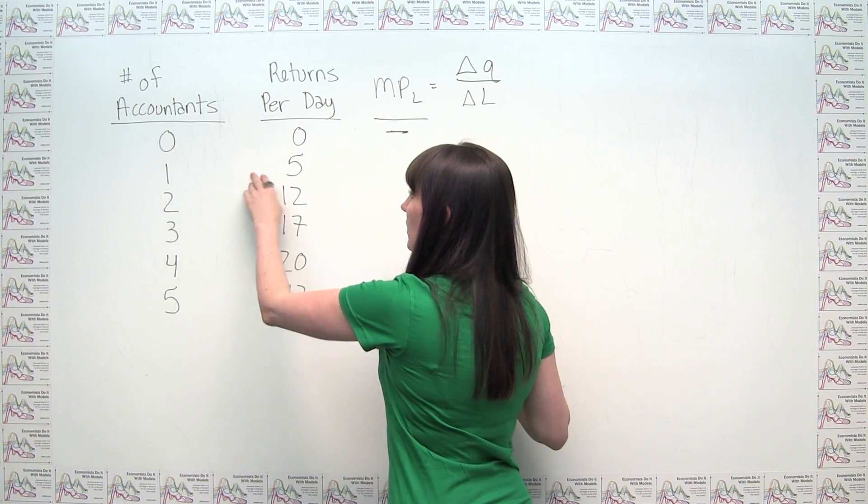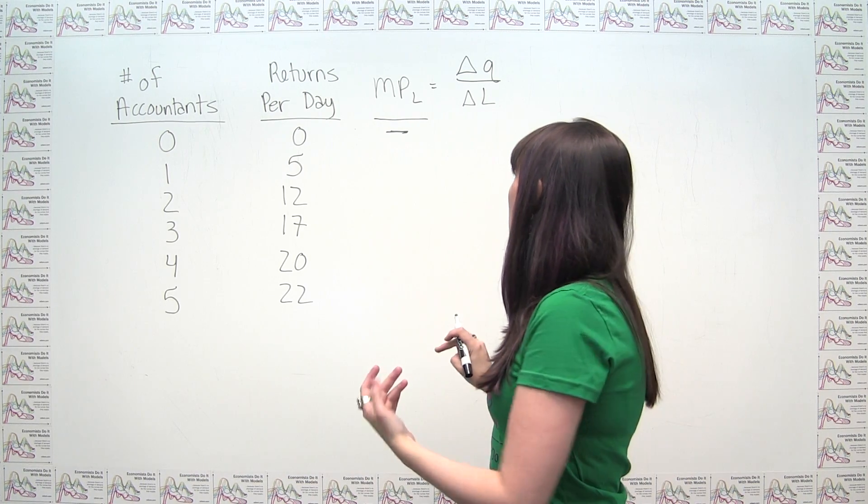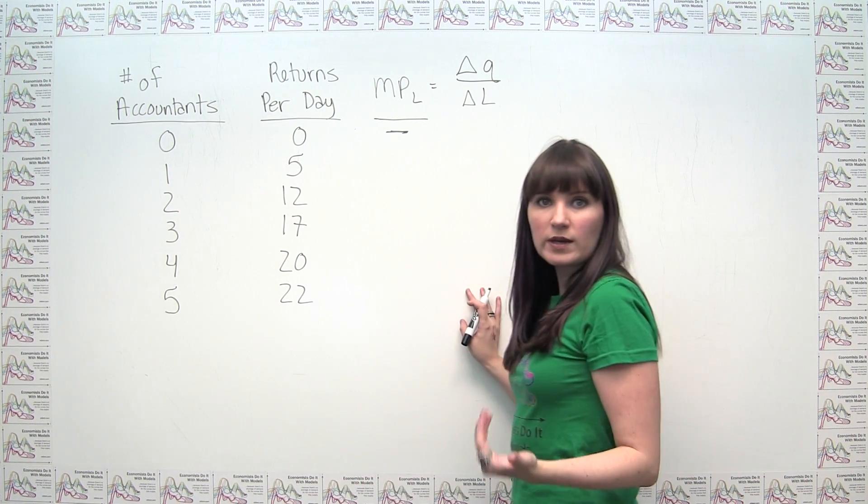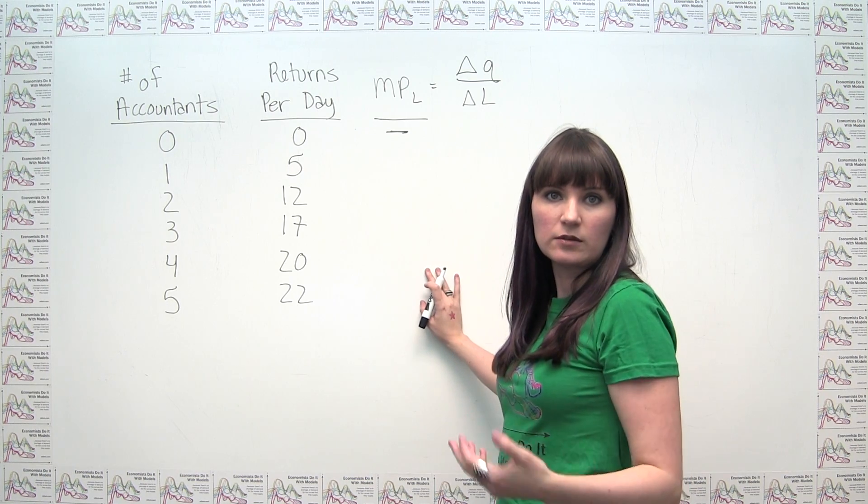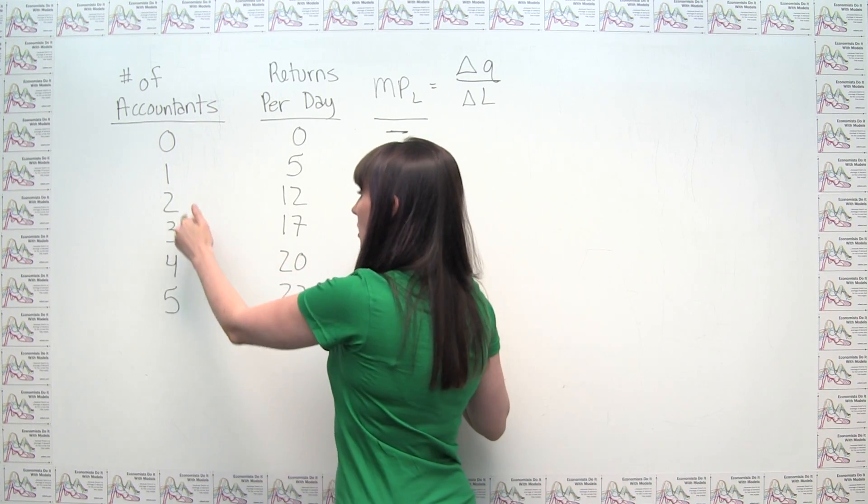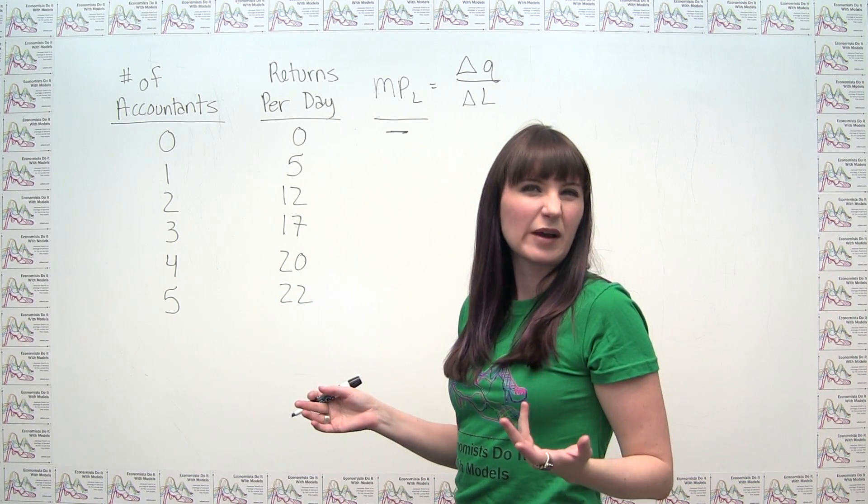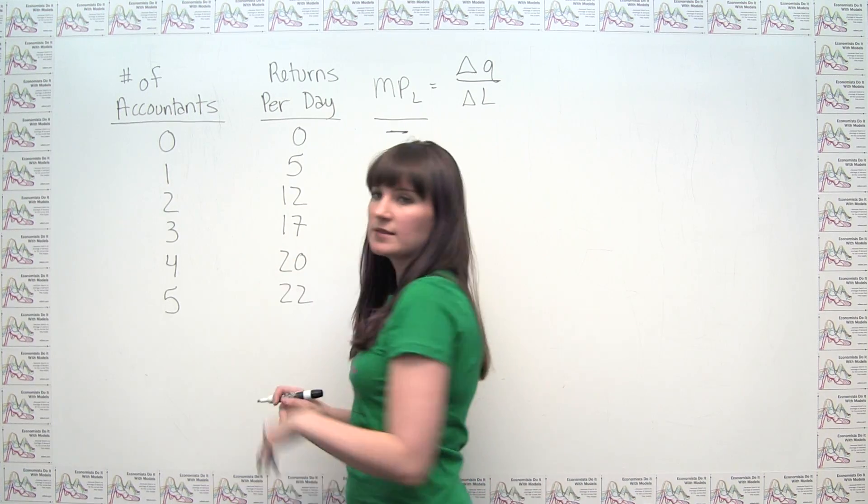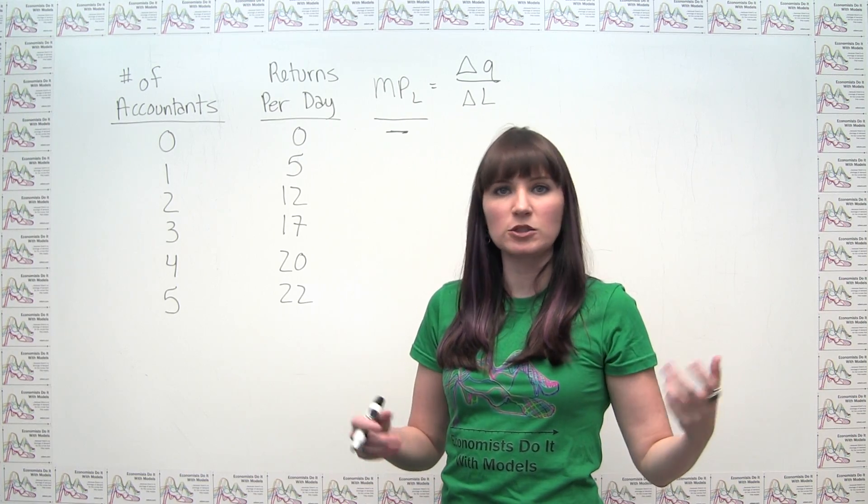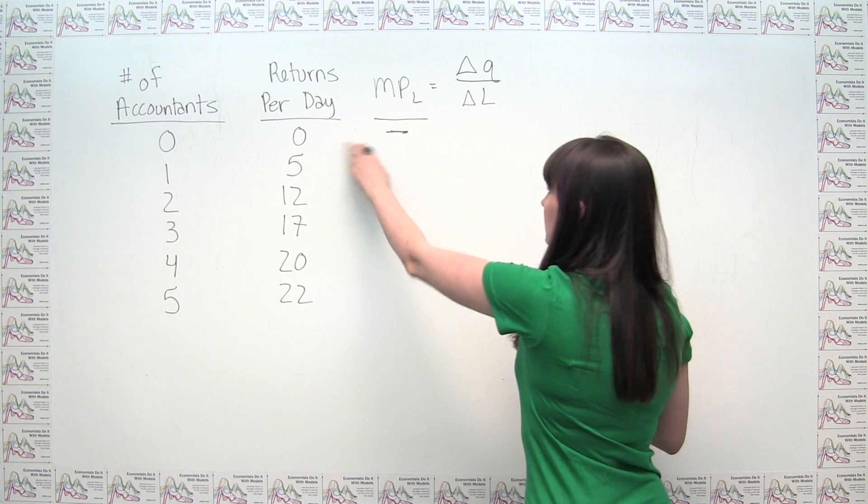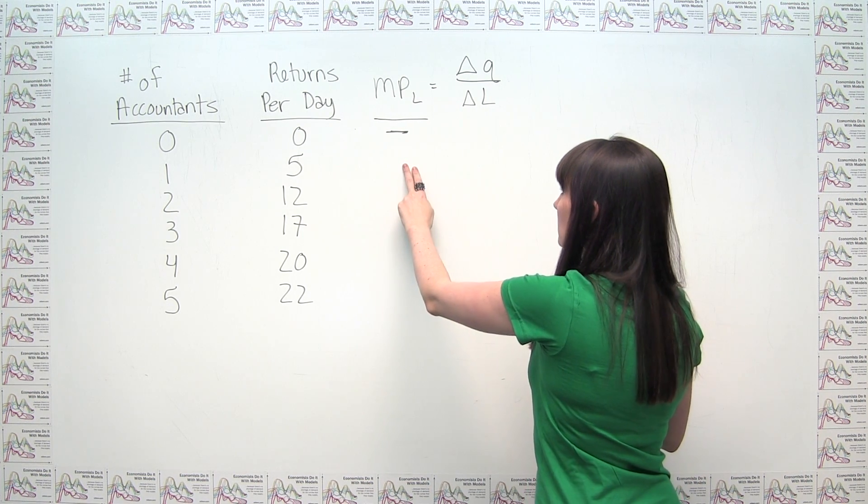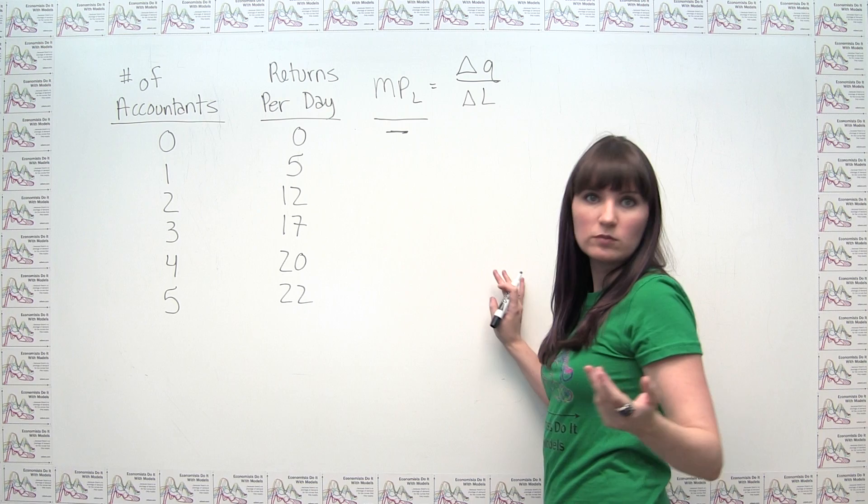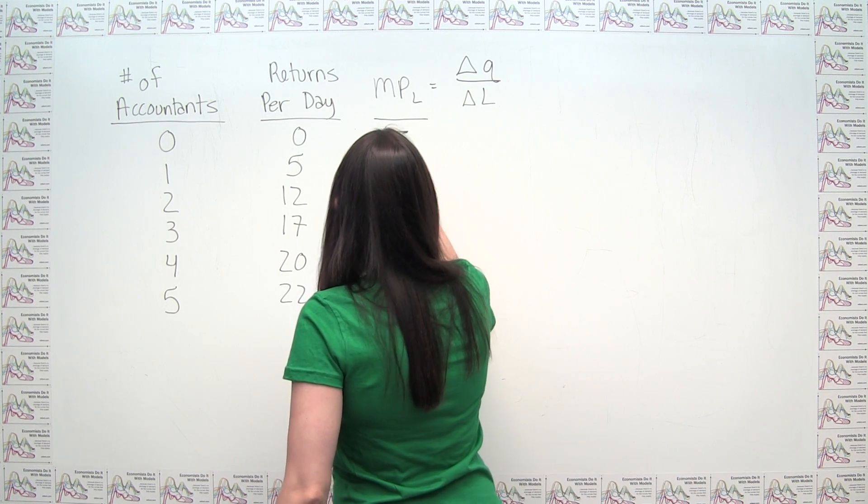What's the marginal product of this first accountant? Well that's the change in quantity in going from zero accountants to one accountant, divided by the change in the number of accountants. Because these are all incrementing by one, we're always dividing by one. This marginal product of labor is five minus zero, or five, divided by one minus zero, or one. So it's five divided by one, or five.